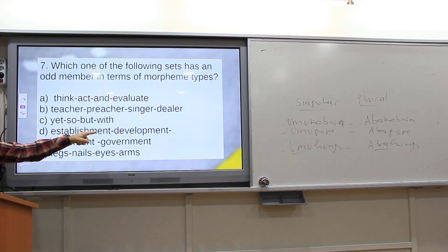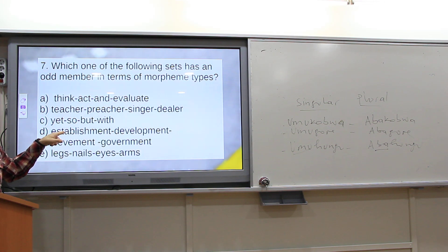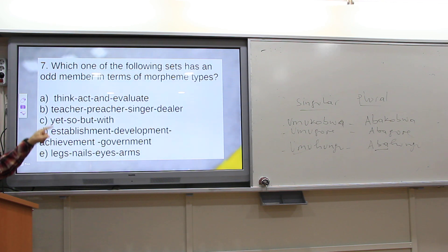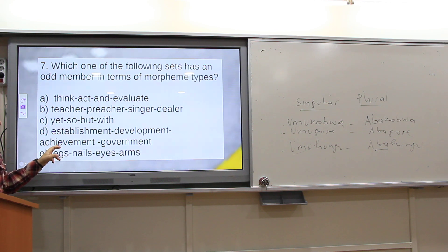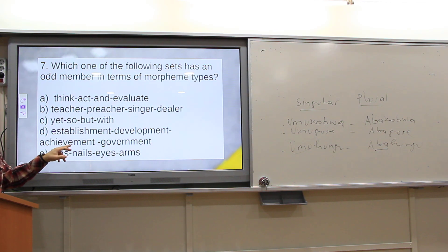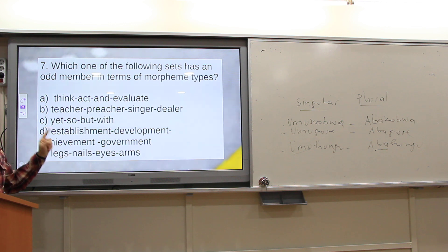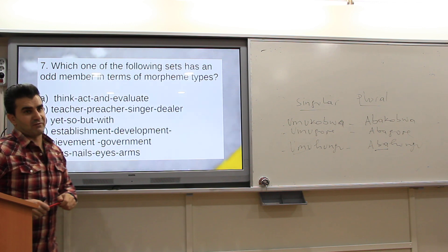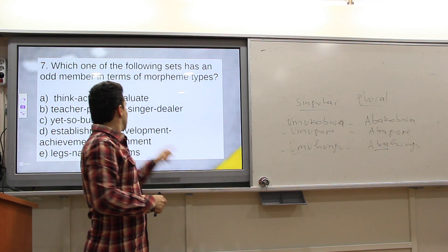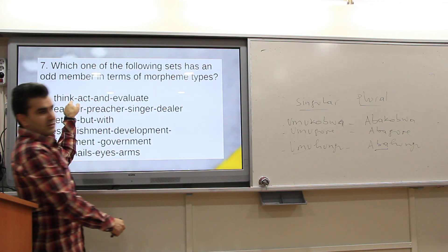Words like establishment and development have a derivational bound morpheme plus a free lexical morpheme. Achievement is also lexical. Words like nails, eyes, arms are free lexical morphemes plus a bound inflectional morpheme. That pattern is different.